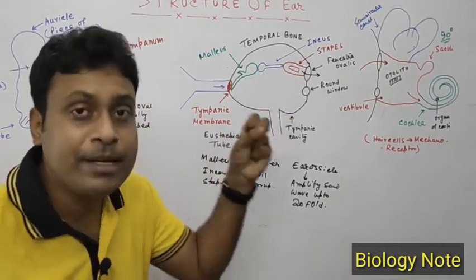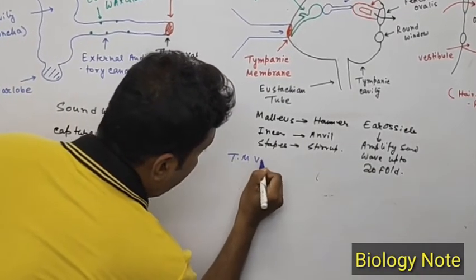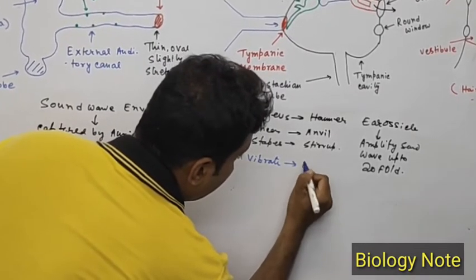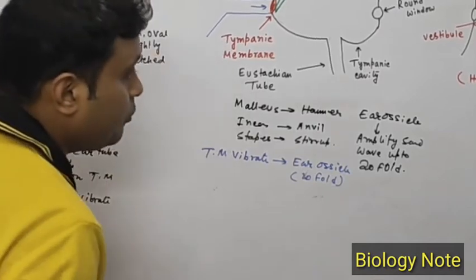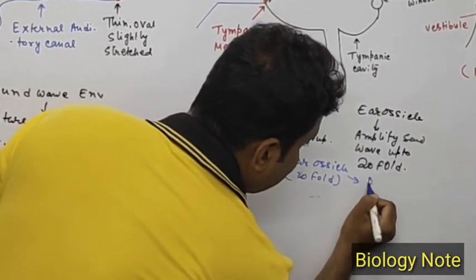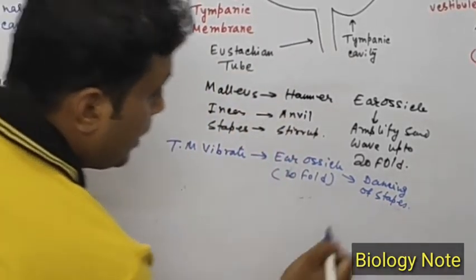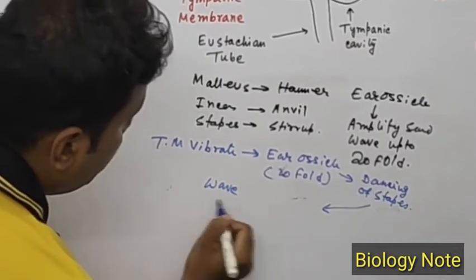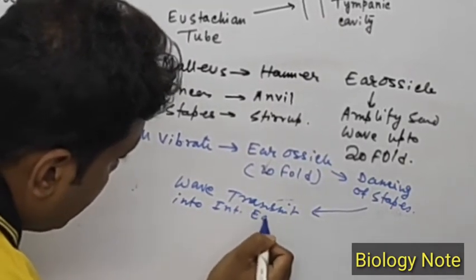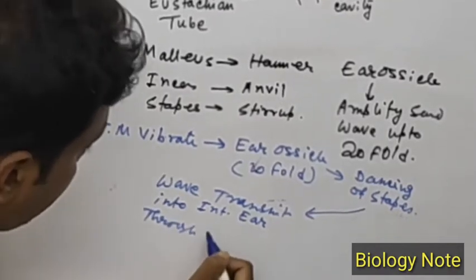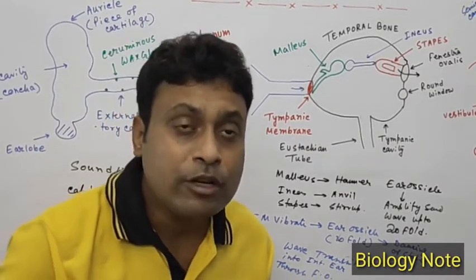The malleus, incus, and stapes receive vibration from the tympanic membrane. This vibration is transmitted to the ear ossicles, causing a 20-fold amplification of the sound wave. The dancing movement of the stapes forms a wave which is transmitted into the internal ear through the fenestra ovalis.